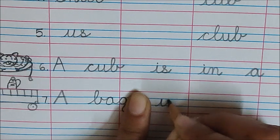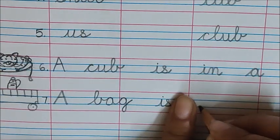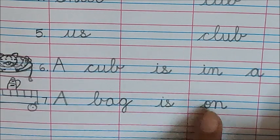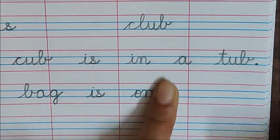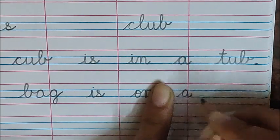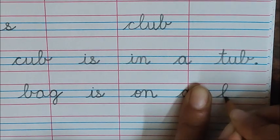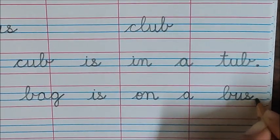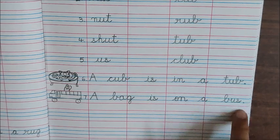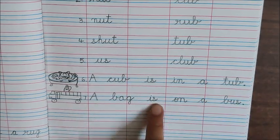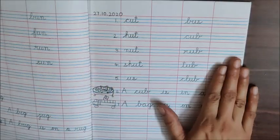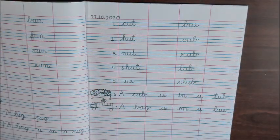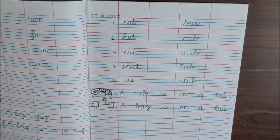Now let's write it. Write down A, leave one finger space, write down bag. Leave one finger space, write down is. Leave one finger space, write down on. A bag is on — leave one finger space, write down a, leave one finger space, write down bus. My sentence is complete. Remember to put a full stop at the end of sentences. A bag is on a bus. So children, after completing this work, ask your mama or papa to click a photo of this work and send it to your class teacher. We will be waiting. Bye children, take care.